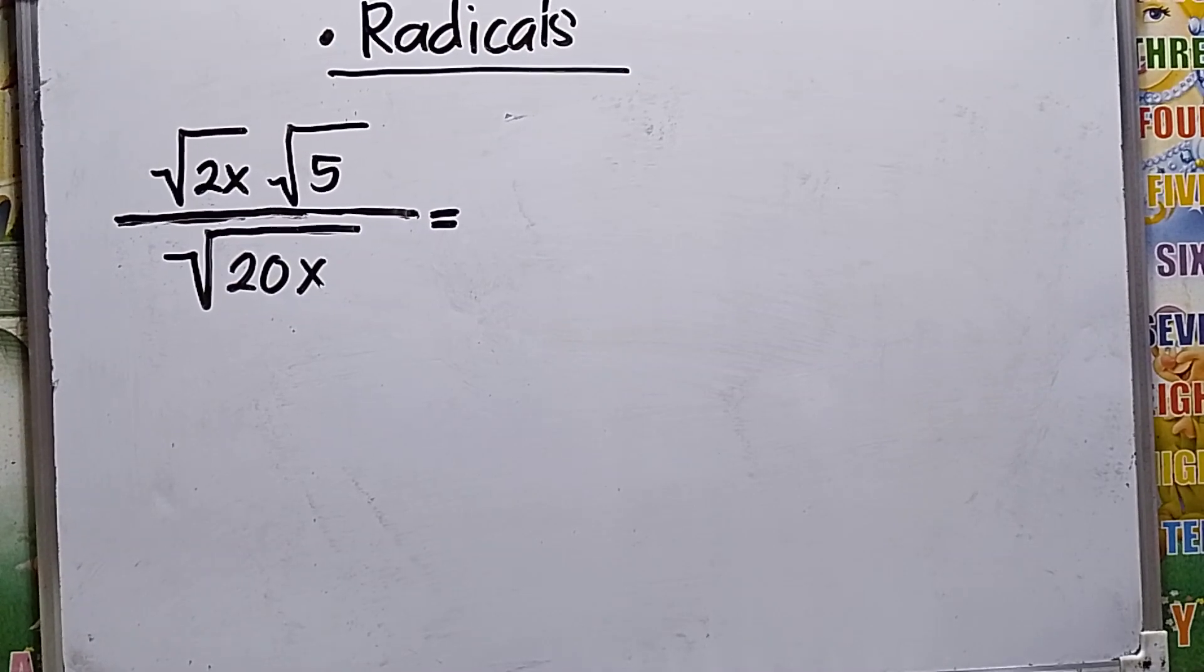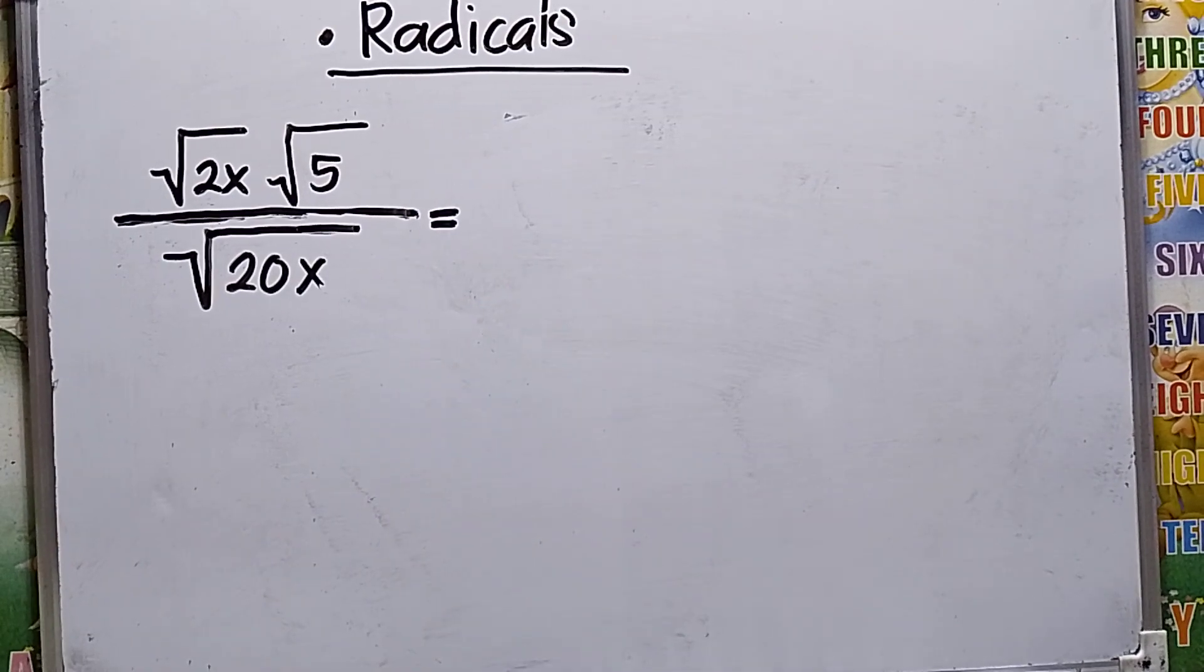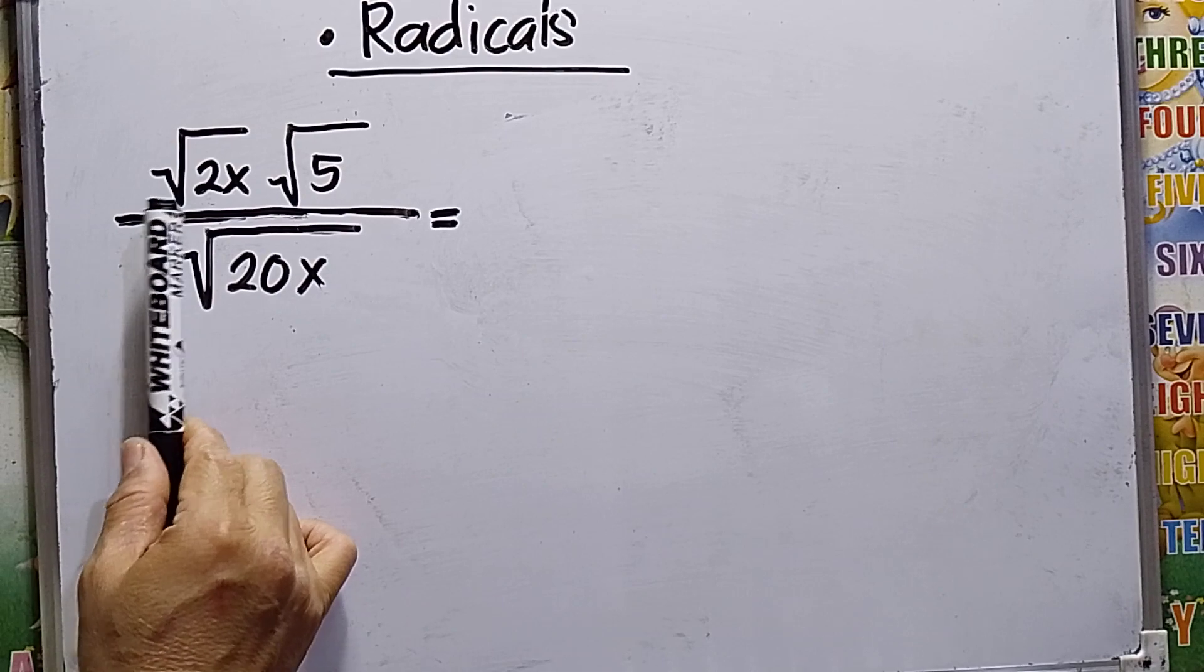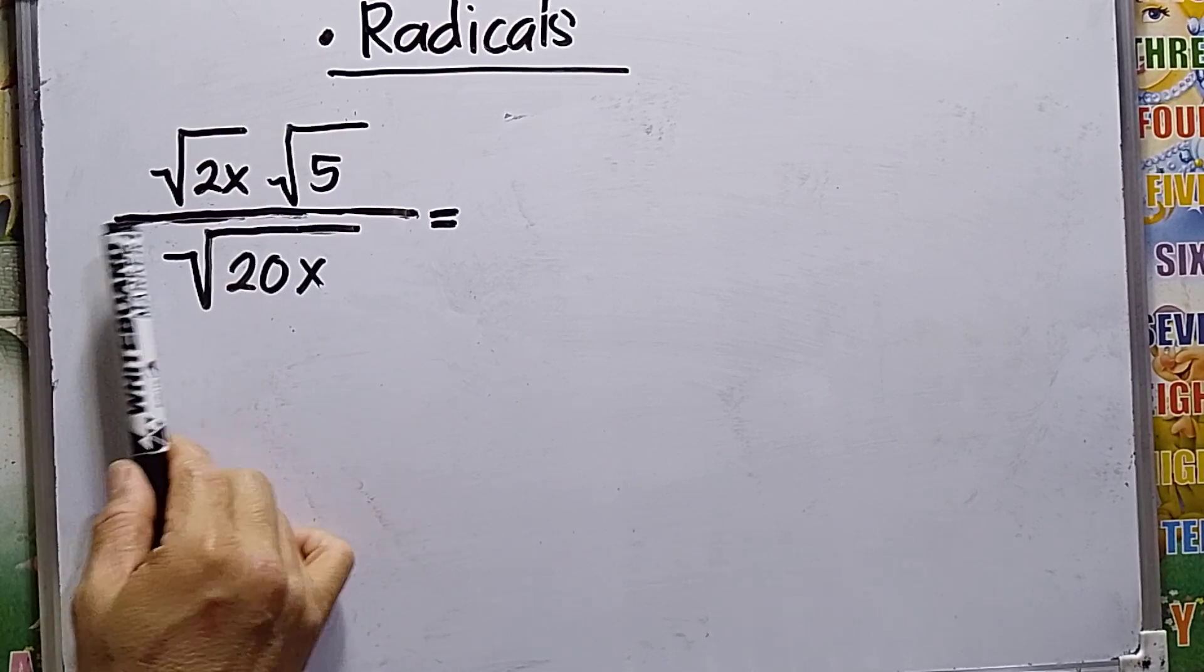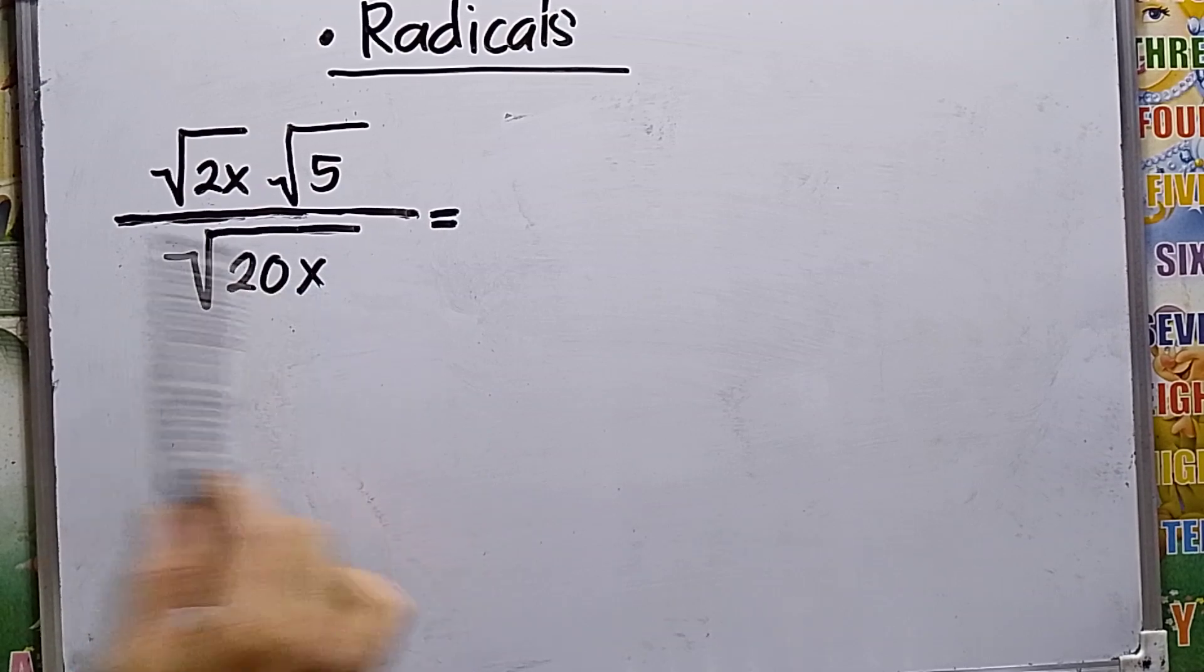Hello to my viewers. My math presentation is about radicals, intended for grade 9 students. I have here square root of 2x times square root of 5, all divided by square root of 20x.